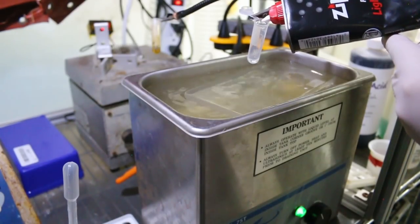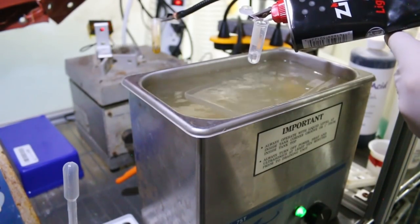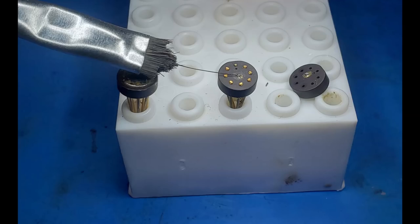Four: Optionally sonicate in lighter fluid to soften silicone. Five: Gently clean silicone off with single hairbrush.